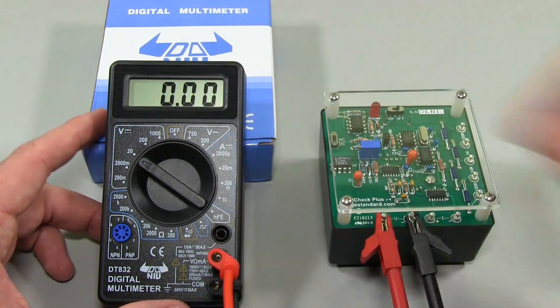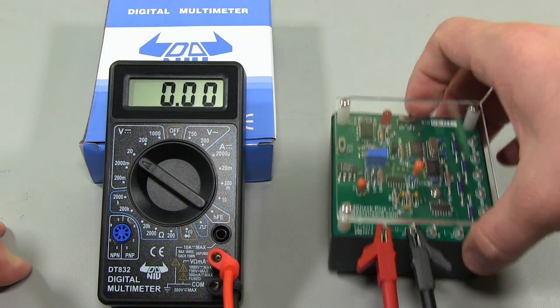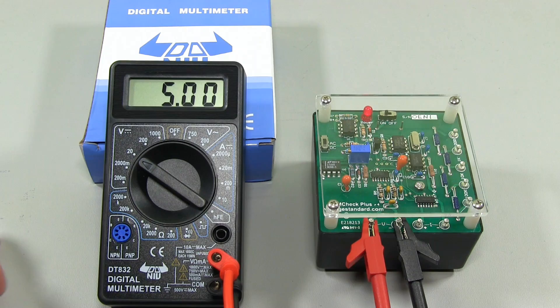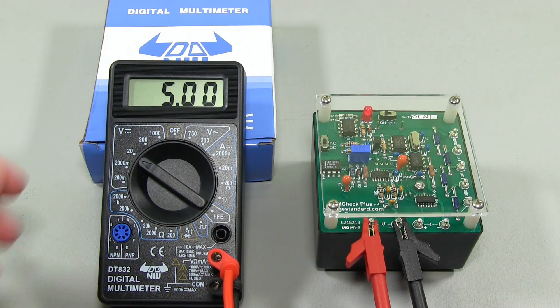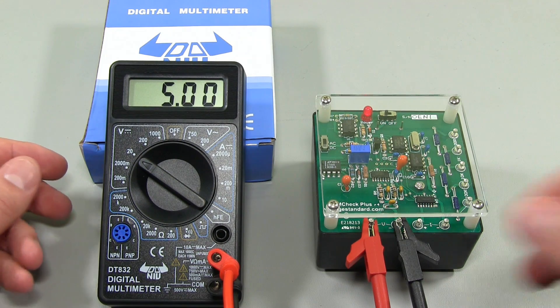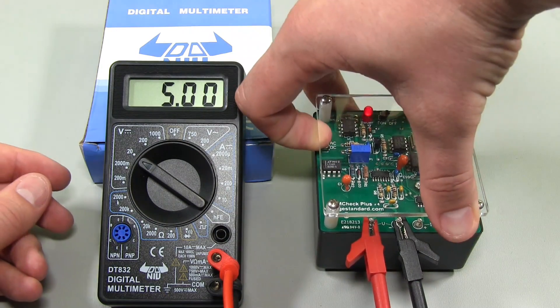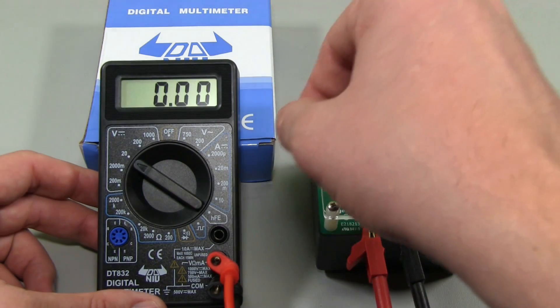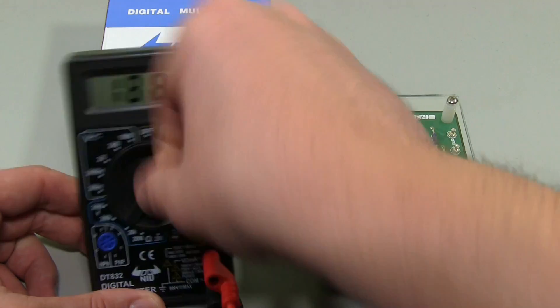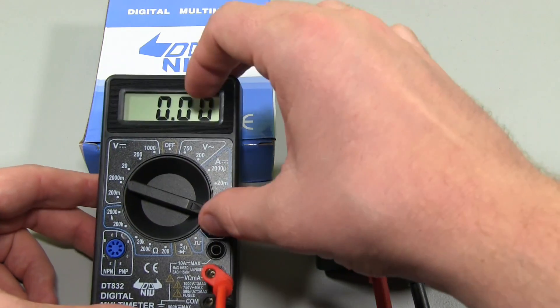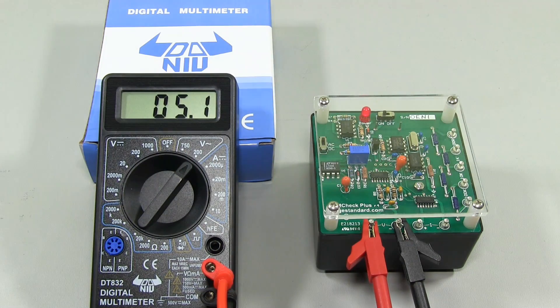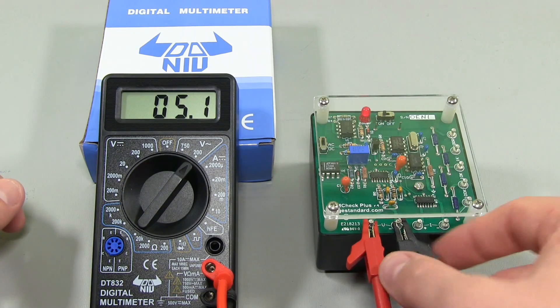I'll put on the 20 volt DC range. This puts out 5 volts, 5 volts exactly. There it is, you can't really complain about that as far as accuracy goes. Now if we switch this to AC, it'll just zero out voltage. 5.1, not bad.